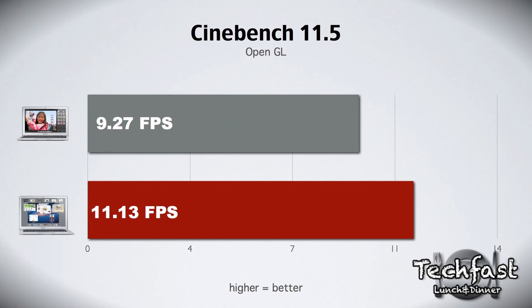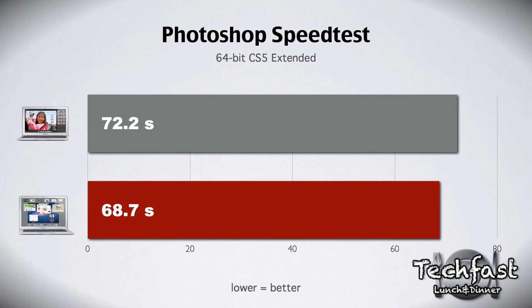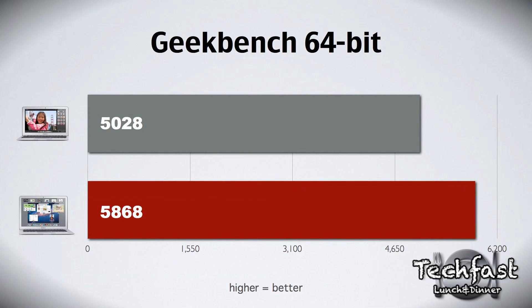In Cinebench 11.5, on the OpenGL portion I got 9.27 frames per second on the 11 inch and 11.13 frames per second on the 13 inch. On the CPU portion the 11 inch scored 1.85 versus 2.09 on the 13 inch. The Photoshop speed test took 72.2 seconds on the 11 inch and 68.7 seconds on the 13 inch. Finally on Geekbench 64, the 11 inch scored 5028 and the 13 inch scored 5868.